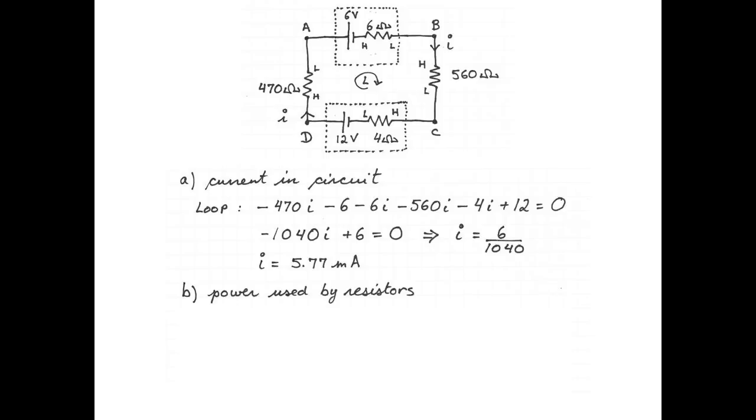Now let's figure out the power used by the resistors. Power in an electric circuit is given by the voltage across an element multiplied by the current through it. For resistors, we also know that the voltage through the resistor is given by Ohm's law, current multiplied by resistance. And so we can combine these two equations for the resistors and say that power is equal to I squared times R. For the 560 ohm resistor, the power is 5.77 milliampere squared multiplied by 560, and that is 18.6 milliwatts. For the 470 ohm resistor, the power is 5.77 milliampere squared multiplied by 470, and that is 15.6 milliwatts.